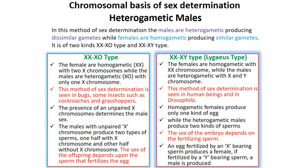The chromosomal basis of sex determination has two types. One is heterogametic male. In heterogametic male, the females are homogametic while males are heterogametic, producing dissimilar gametes. There are two subtypes: XO type and XY type.